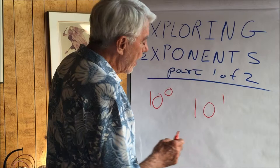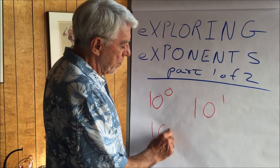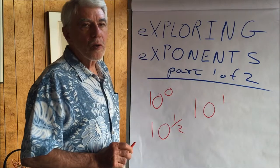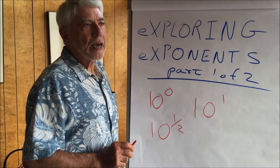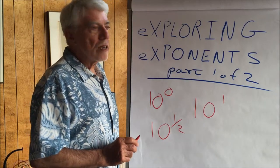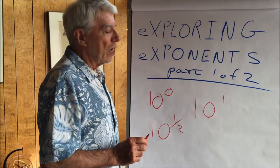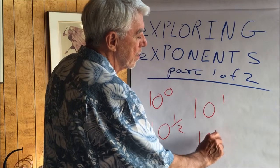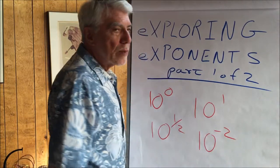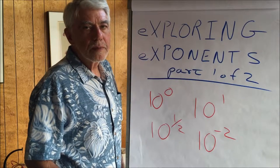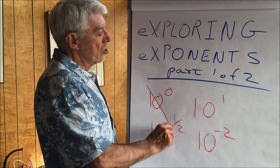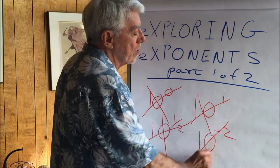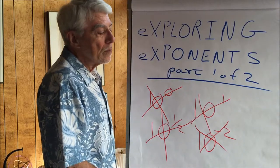How about a fractional exponent? 10 raised to the 1/2. How do you multiply something by itself half a time? How about a negative exponent? 10 to the minus 2. That definition you were given doesn't work — it simply does not work well.